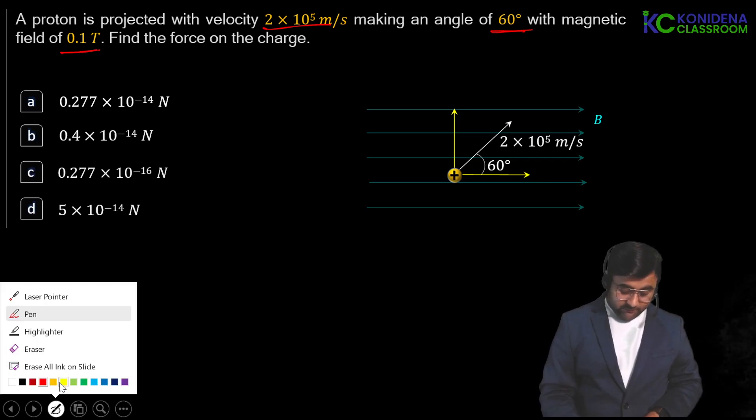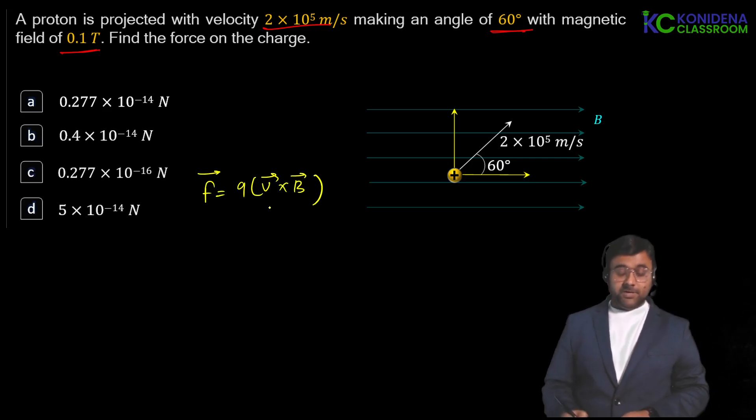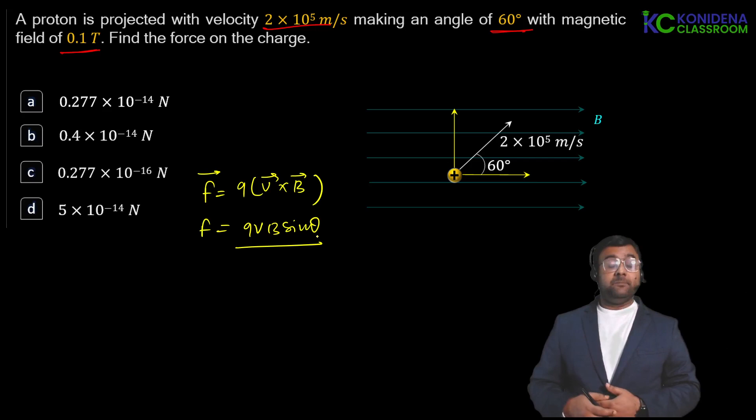So if you talk about the force, the force formula we have is Q times V vector cross B vector. But if you talk about its magnitude, the magnitude is just going to be Q VB sine of theta. That theta is the angle between V and B.